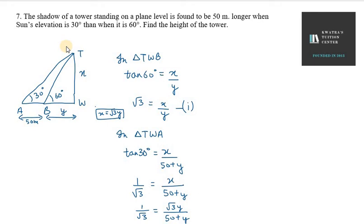Now, here you need to apply cross multiplication. 50 plus y will come over to left-hand side. And under root 3 into under root 3y will be there. So, it will be 3y. 50 plus y.